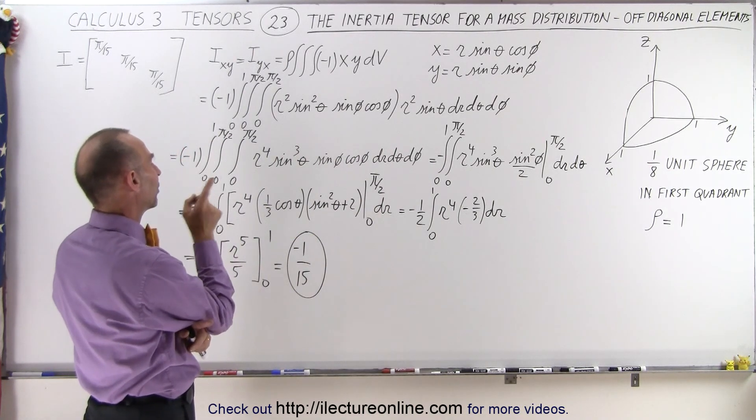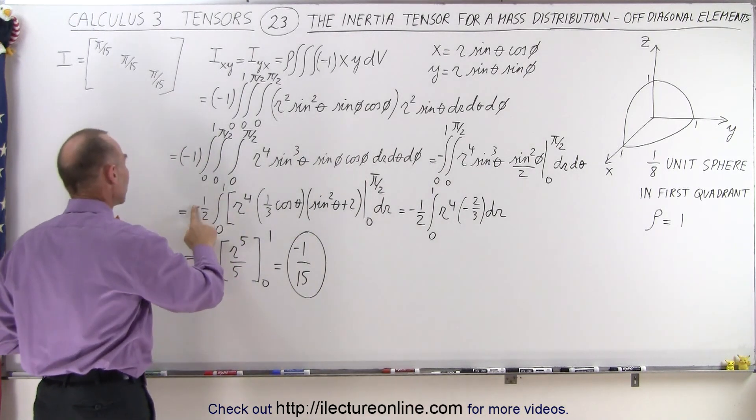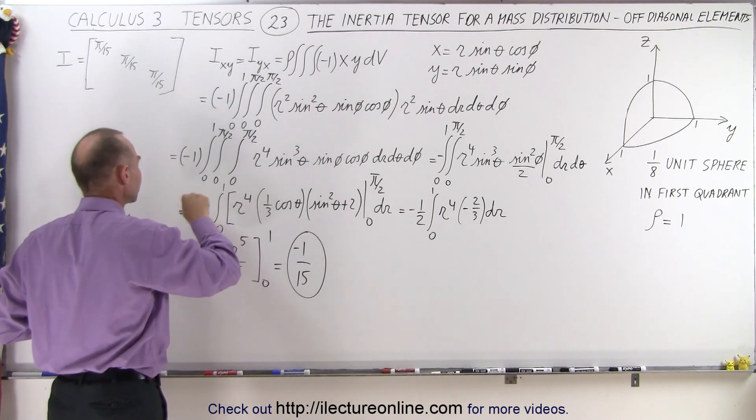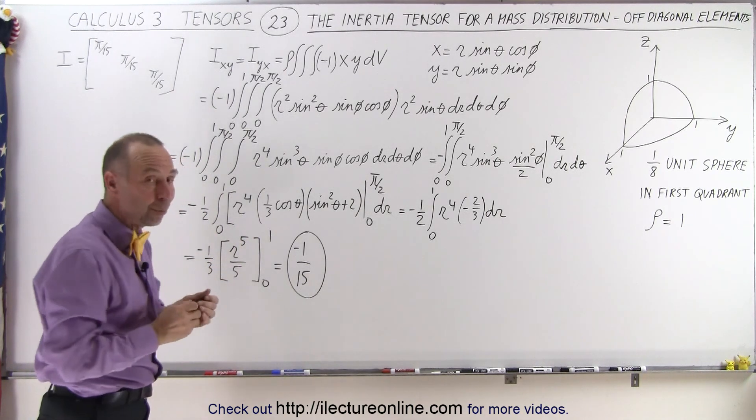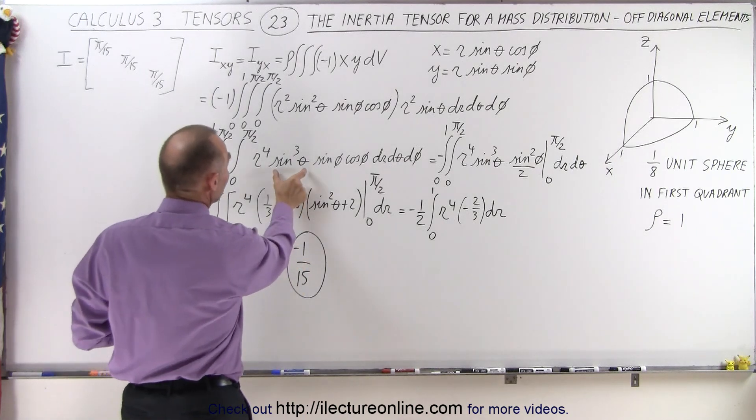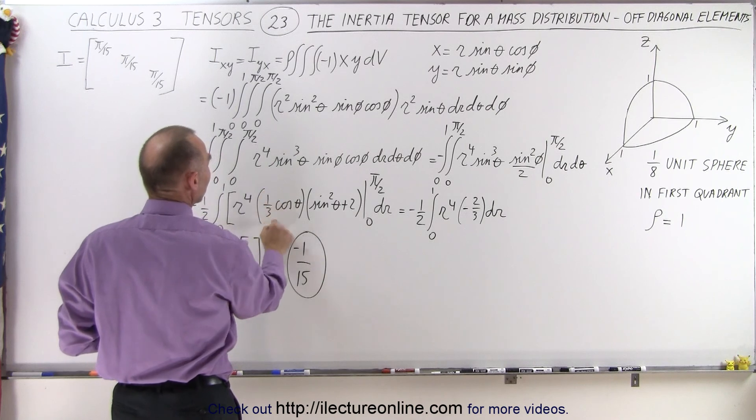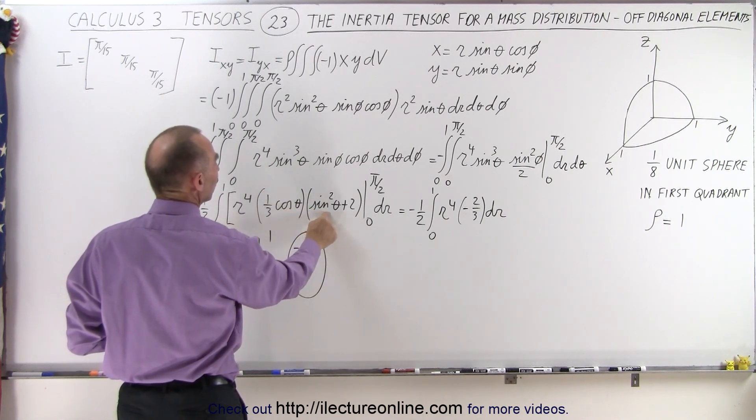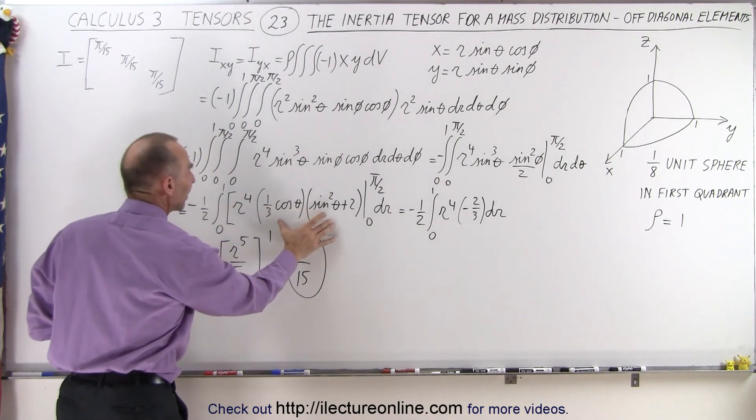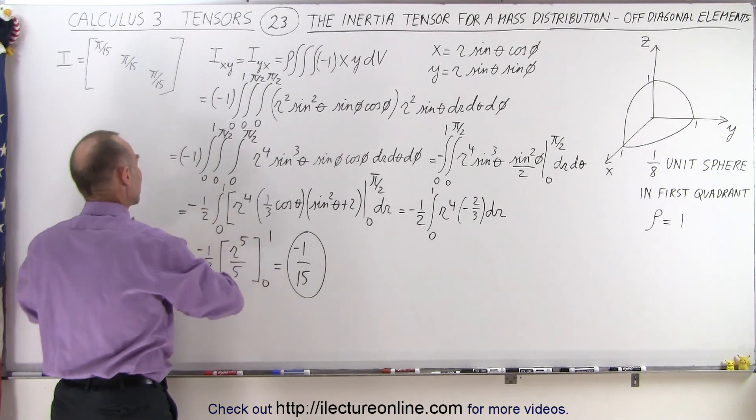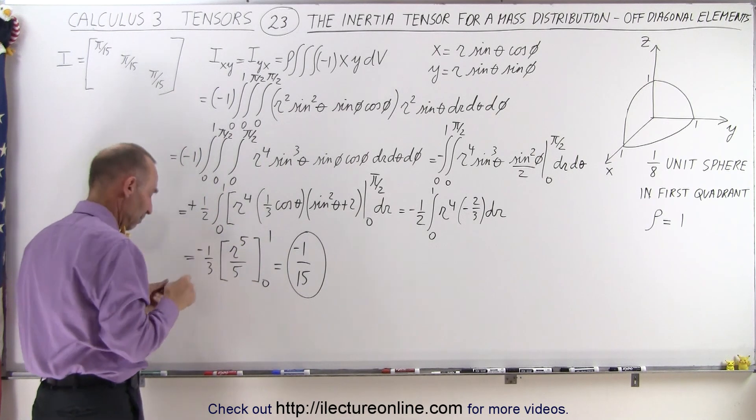Why do we end up with a plus 1/2? Well, first we end up with a minus 1/2, so let's plug in the minus, but then when we integrate the following, the sine cubed of theta, that is equal to the minus of 1/3 the cosine of theta times the sine squared of theta plus 2. So the minus from here goes over here, and makes that into a plus.